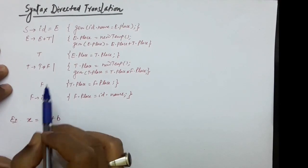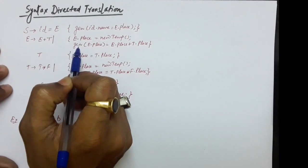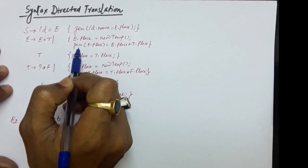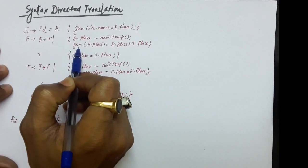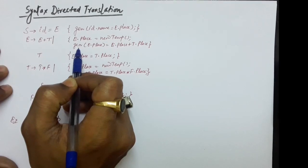The next thing is 'generate'. What does generate do? It actually generates the three address code — it prints the three address code statement.